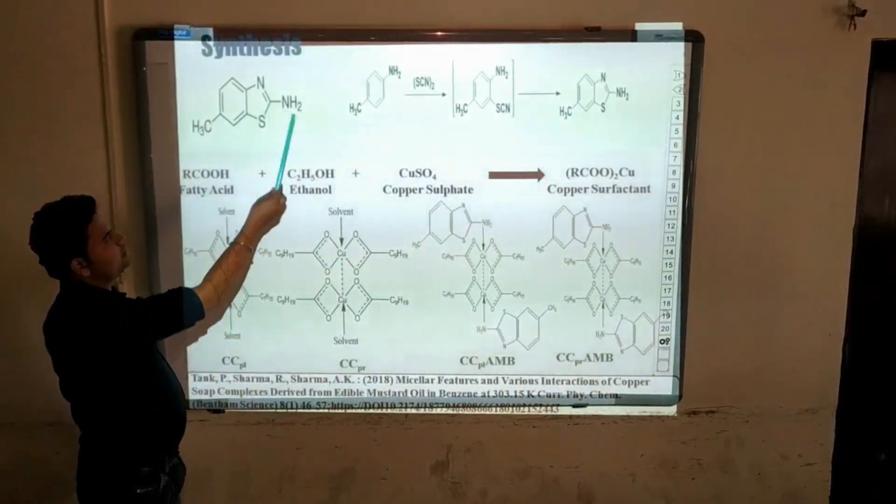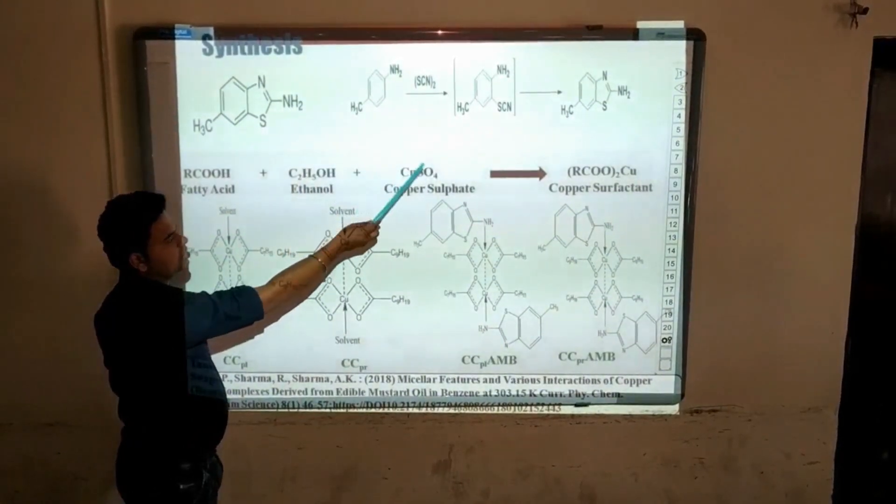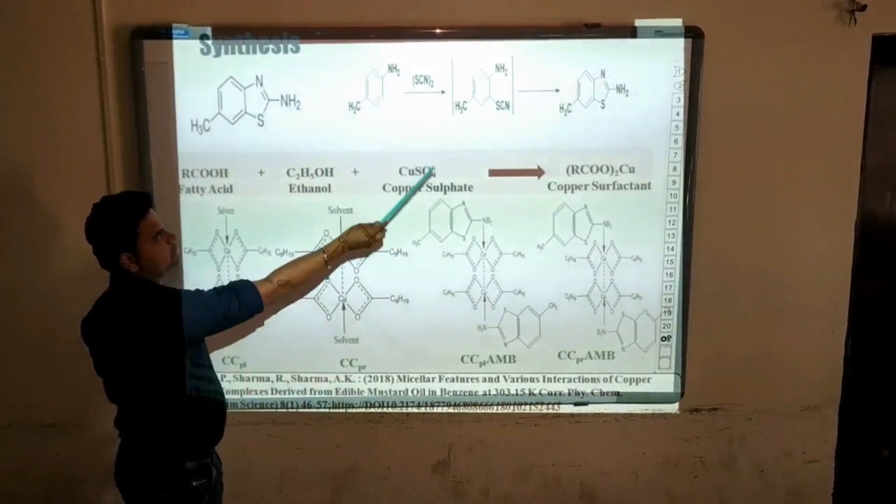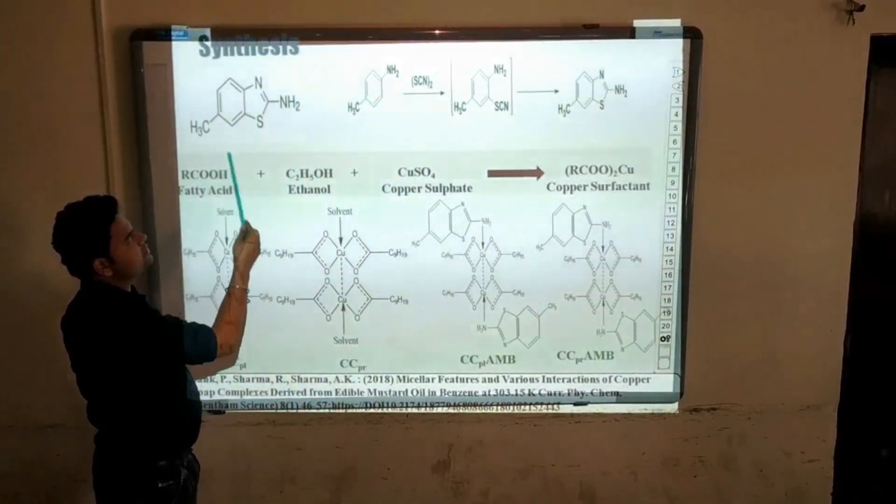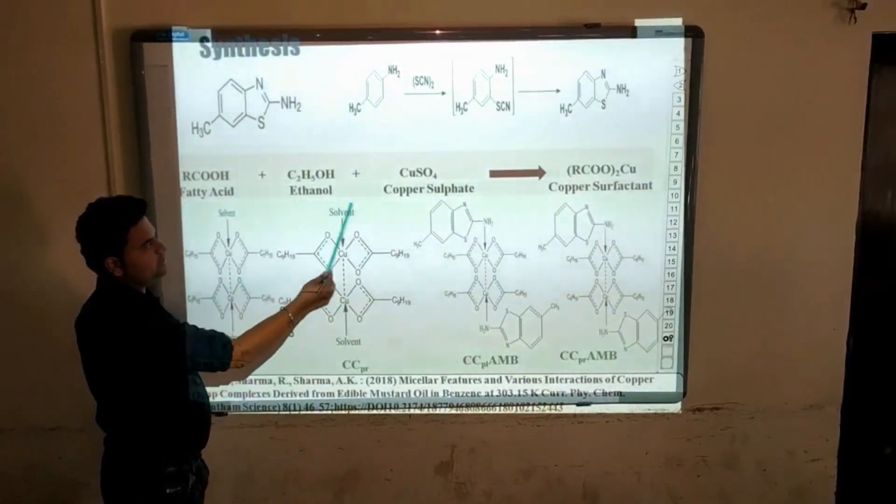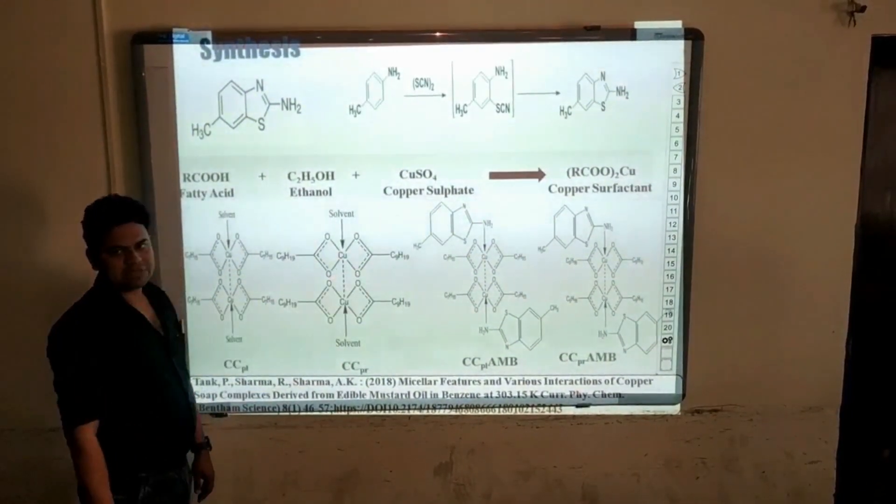Now we come to the synthesis part. First of all, we synthesize the ligand by thiocyanation method as we can see here. And this is the structure of the ligand synthesized, 2-amino-6-methyl benzothiazole. After that, we synthesize the copper surfactants by direct metathesis reaction as we can see here.